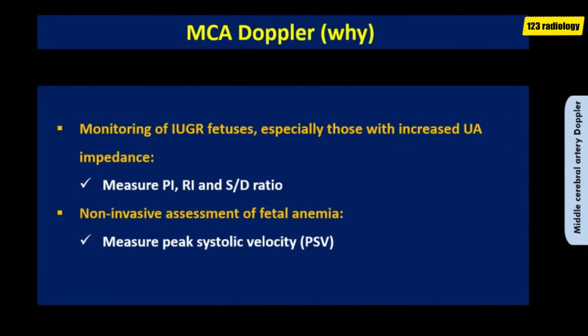Fetal Doppler ultrasound of the middle cerebral artery is used in two situations. First, monitoring of intrauterine growth restriction fetuses, especially those with increased umbilical artery impedance — in these cases we measure pulsatility index, resistive index, and S-D ratio. The second situation is non-invasive assessment of fetal anemia — in these cases we measure the peak systolic velocity.